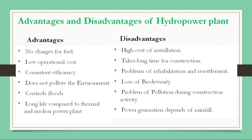Hydropower projects are associated with pollution problems, especially during construction activity — there can be air pollution from the operation of equipment and machinery, water pollution due to sewage generated by staff, and noise pollution from equipment and machinery. Another disadvantage is that power generation depends on rainfall — if there is no adequate rainfall in a particular year, power generation by the hydropower plant will drop.